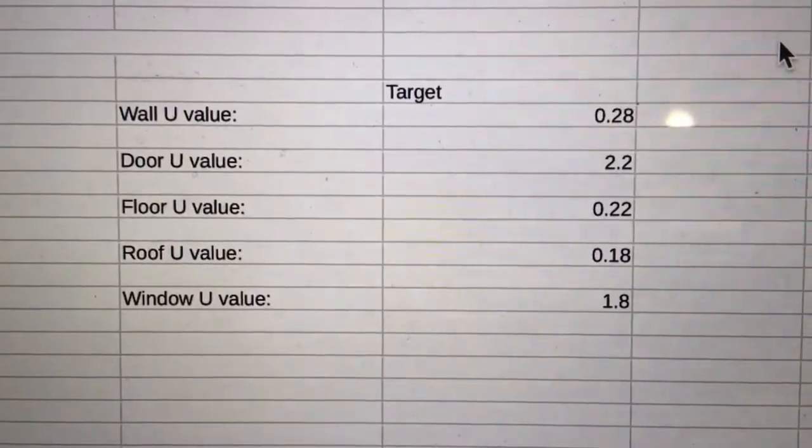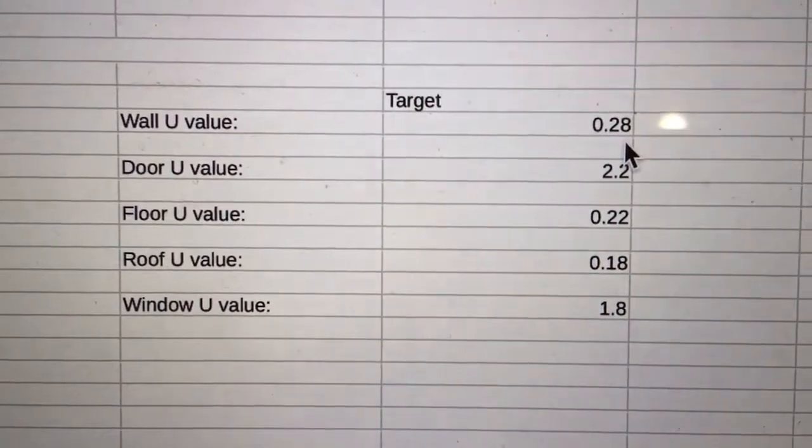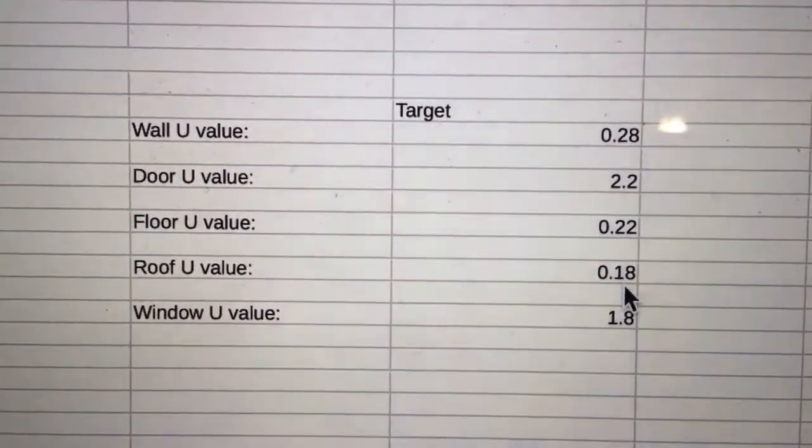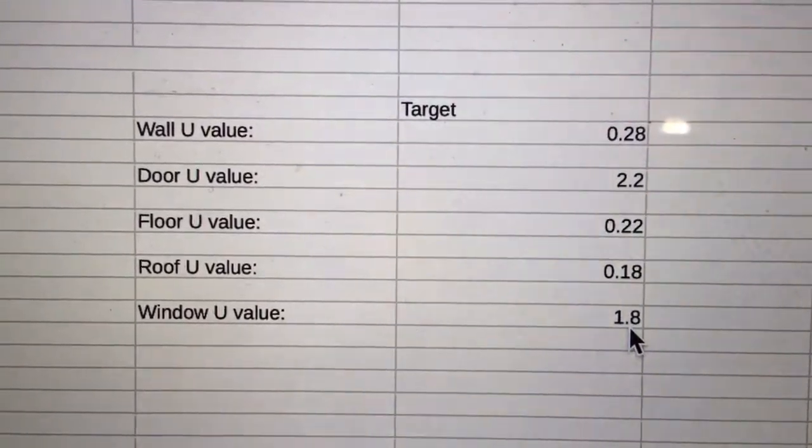Building control usually just asks you to hit certain U values for each of the elements of the building. These are the target values I was given. The wall, 0.28. The door, 2.2. The floor, 0.22. The roof, 0.18. And the window, 1.8.